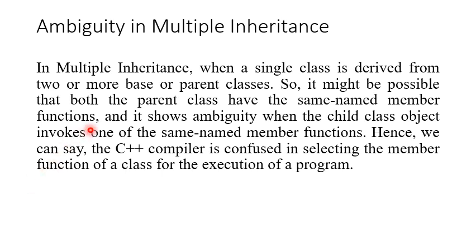In multiple inheritance, when a single class is derived from two or more base or parent classes, it might be possible that both parent classes have the same-named member function. Same-named member functions in both base classes show ambiguity.